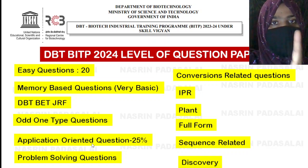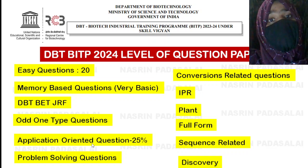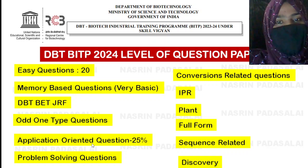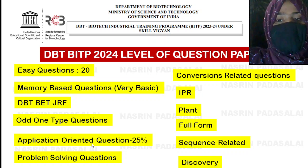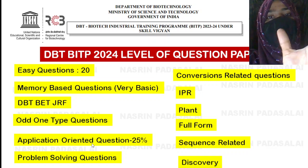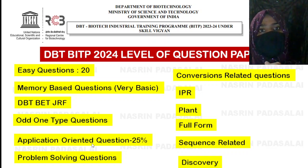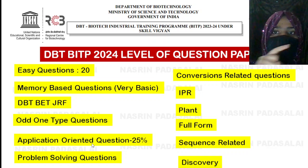Full form questions are important. Last year they asked the full form of CRISPR. They can also ask the full form of ICMR, DBT, BITP (Biotech Industrial Training Program), and CSA. Sequence-related questions are also expected — not bioinformatics, but things like what is the telomere sequence in human DNA, what is the Kozak sequence, what is the Shine-Dalgarno sequence. Sometimes they give you a sequence and ask you to figure out the forward primer and reverse primer.